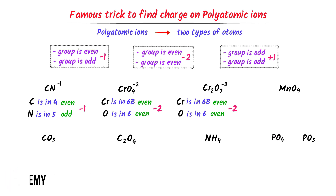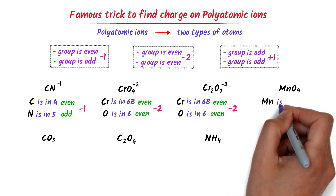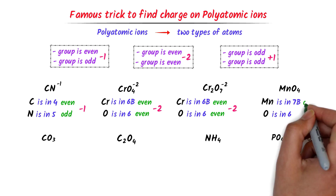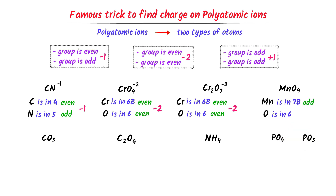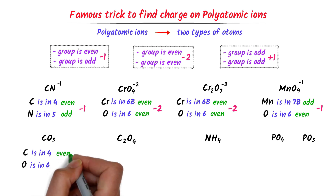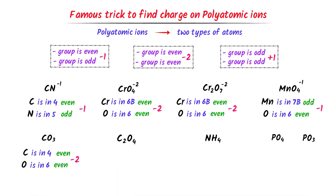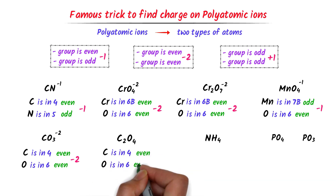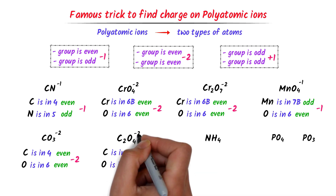In the case of permanganate ion, the group number of manganese is 7B and that of oxygen is 6. Seven is odd and 6 is even, so the charge on permanganate ion is negative 1. In the case of carbonate ion, carbon is in the 4th group and oxygen is in the 6th group — both even — so the charge is negative 2. Similarly, oxalate ion also contains carbon and oxygen, so its charge is also negative 2.